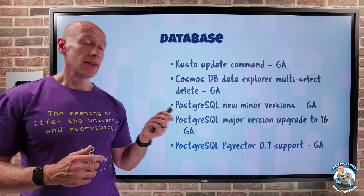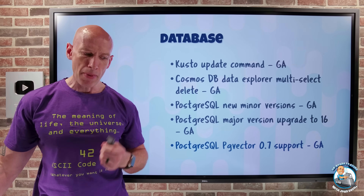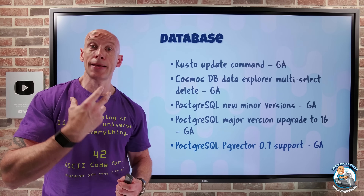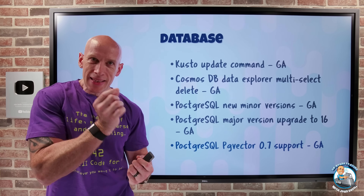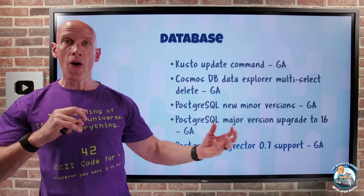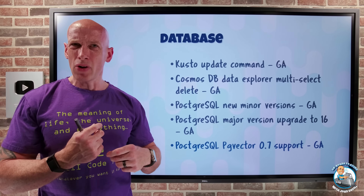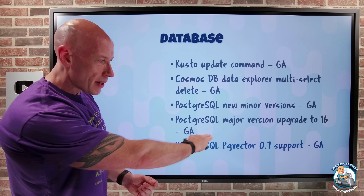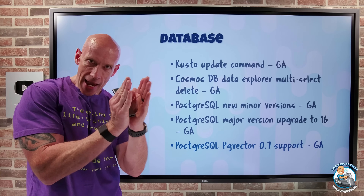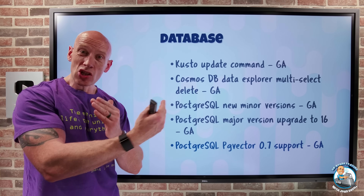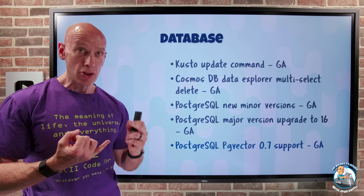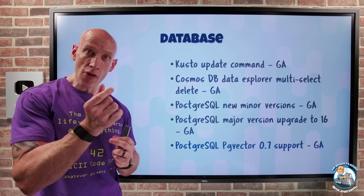PG vector version 0.7 is now supported. Vectors are hugely important in AI because they represent the semantic meaning of data — enabling natural language search based on meaning rather than exact text or numbers. PG vector adds capabilities to create vectors and compare them to find nearest neighbors, i.e., the closest semantic meaning. Version 0.7 brings new vector types and new algorithms for finding those neighbors.